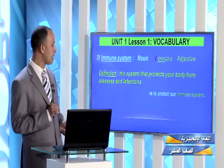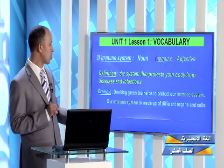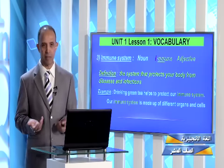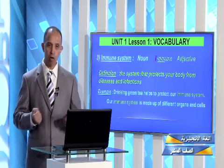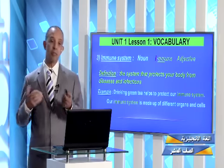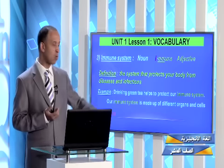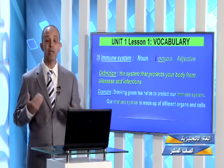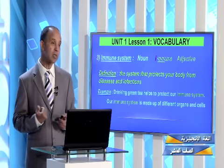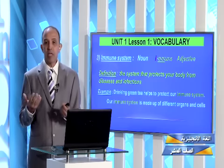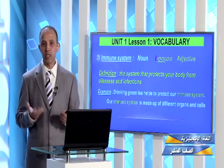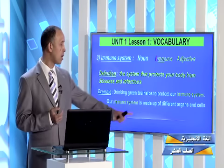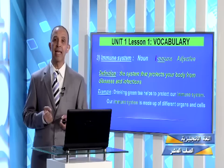As an example, we have many things that help our immune system or make it stronger. It is believed that we should drink green tea because it helps our immune system. We can also say that our immune system is made up of different organs and cells.